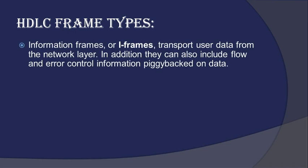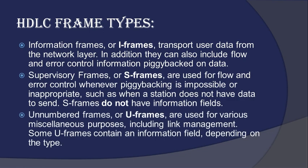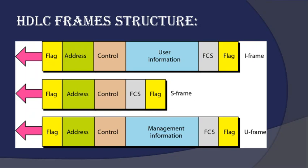Now, there are some frames we need to study about HDLC. There are three basic types of HDLC frames: information frames, supervisory frames, and unnumbered frames. The basic structure of all three frames is as shown in the figure. In an I-Frame, it uses flags, address, control, user information, and FCS. In an S-Frame, there is no user information — it only contains address, control, and FCS. In a U-Frame, there is address, control, management information, and FCS, but no user information — you just need to send the management of the data.